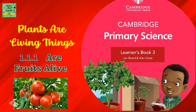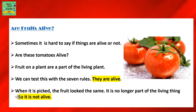Plants are living things. Are fruits alive? Sometimes it is hard to say if things are alive or not. Are these tomatoes alive? Fruit on a plant are a part of the living plant. We can test this with the seven rules. They are alive.